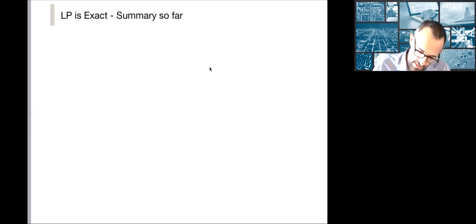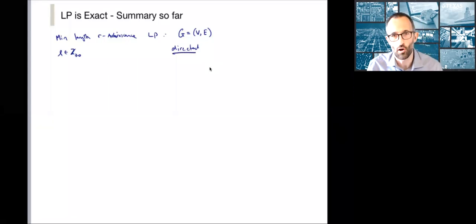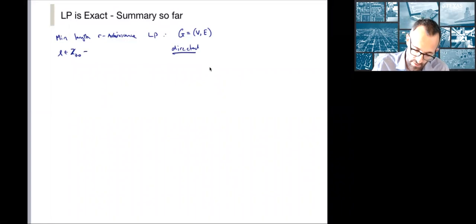Recall that the min-length R-arborescence LP is given as follows. The critical thing is we've got a vector, which we assume to be integral, of non-negative lengths. We've got our directed graph, and I'll use the terms edges and arcs interchangeably. We have the lengths on every single arc.